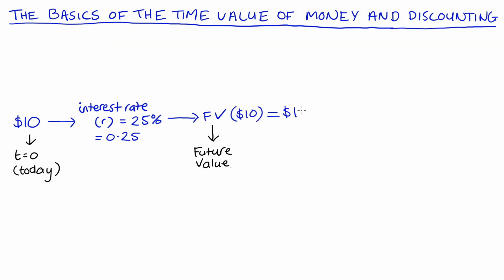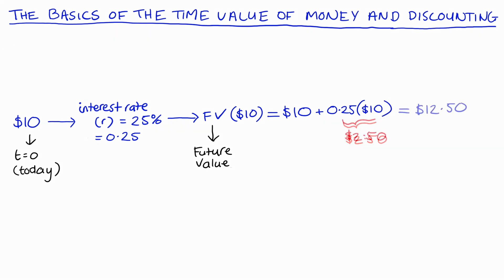So the future value — that's FV — of that ten dollars will be equal to the ten dollars plus the interest earned, so that's 0.25, or 25%, of ten dollars. Now 0.25 times ten is two dollars fifty, so the whole sum comes to ten dollars plus two dollars fifty, which is twelve dollars fifty. So we invest ten dollars today, earn some interest, and get twelve dollars fifty in a year's time at t equals one.